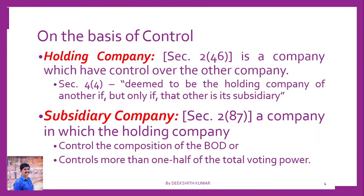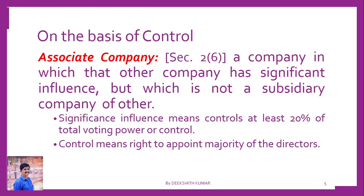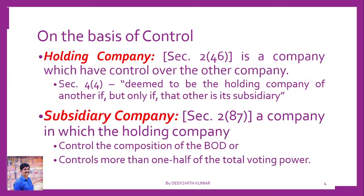The next classification is on the basis of control. On the basis of control, there are three categories: one is holding company, the second is subsidiary company, and the third is associate company.